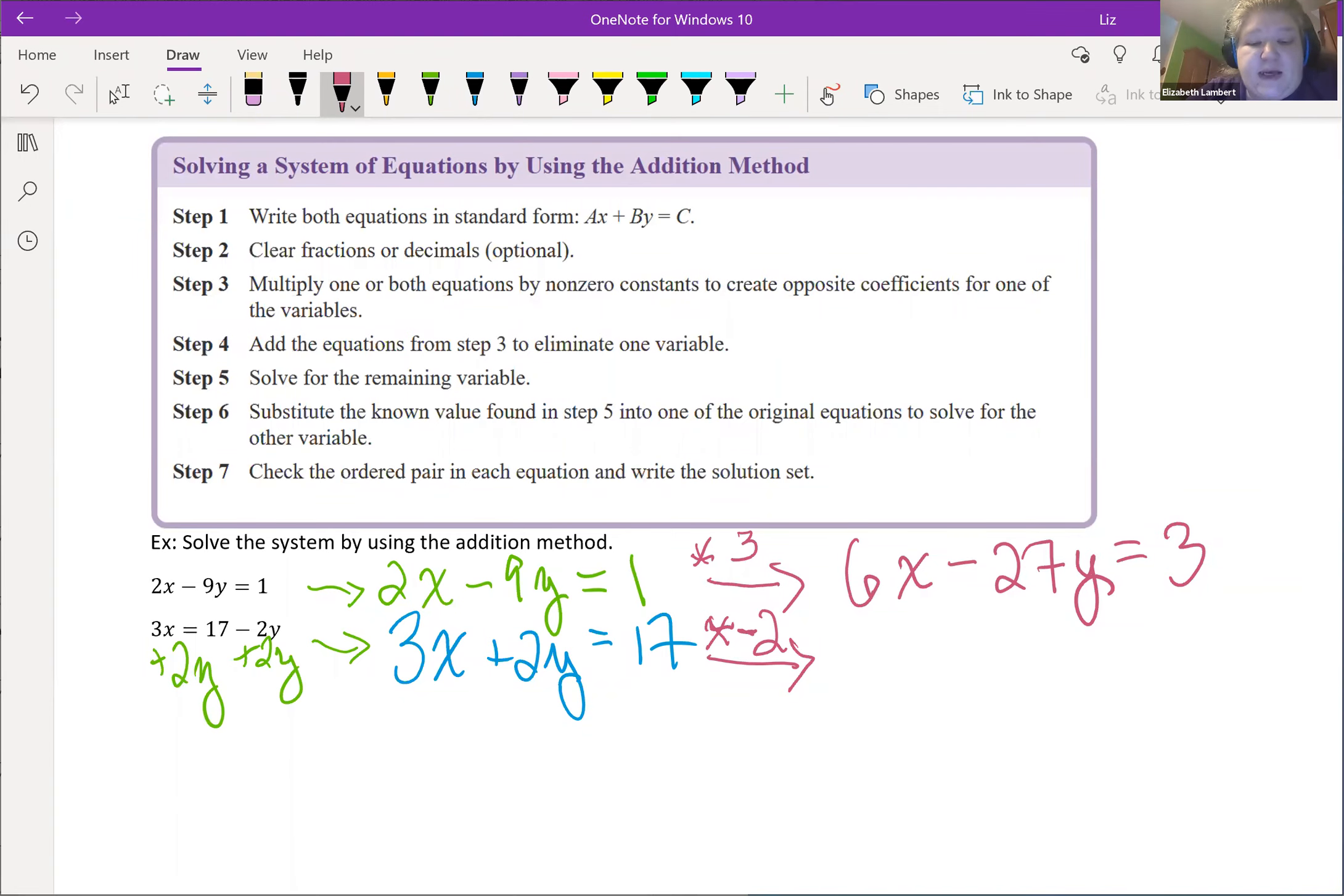Now here 3x going through multiply by negative 2 is negative 6x's. 2y's being multiplied by negative 2, negative 4y's. And 17 times negative 2, well we know it's going to be negative and that is 34.